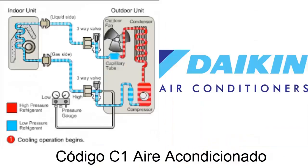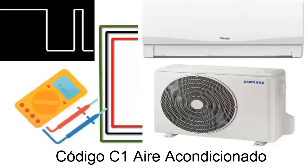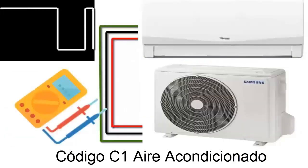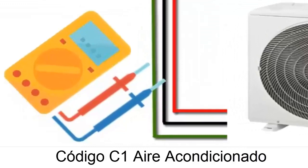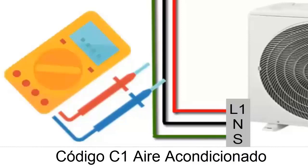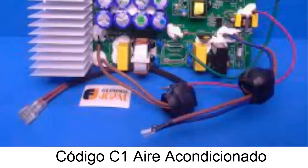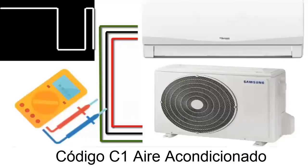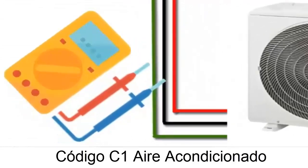In Daikin air conditioning systems, the C1 error code is generally related to communication problems between the indoor unit and another system unit, such as an outdoor unit or a central control unit. Possible causes of this problem are: 1. Failure in the communication cables. 2. Issues in the control unit. 3. Voltage supply problems from the external source.